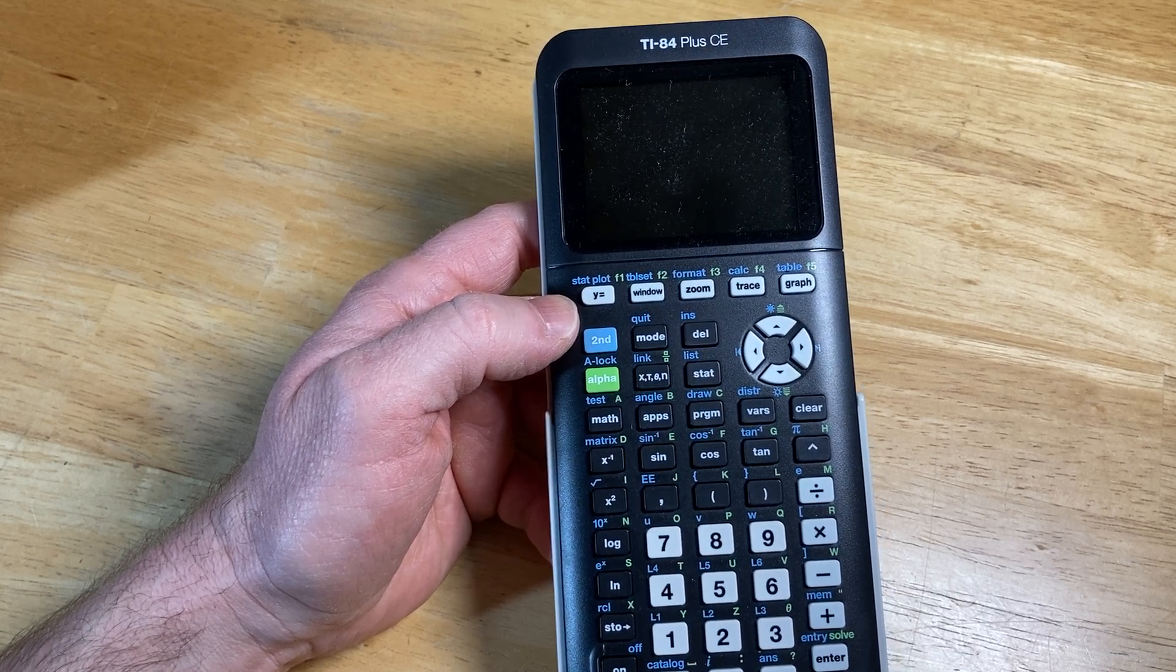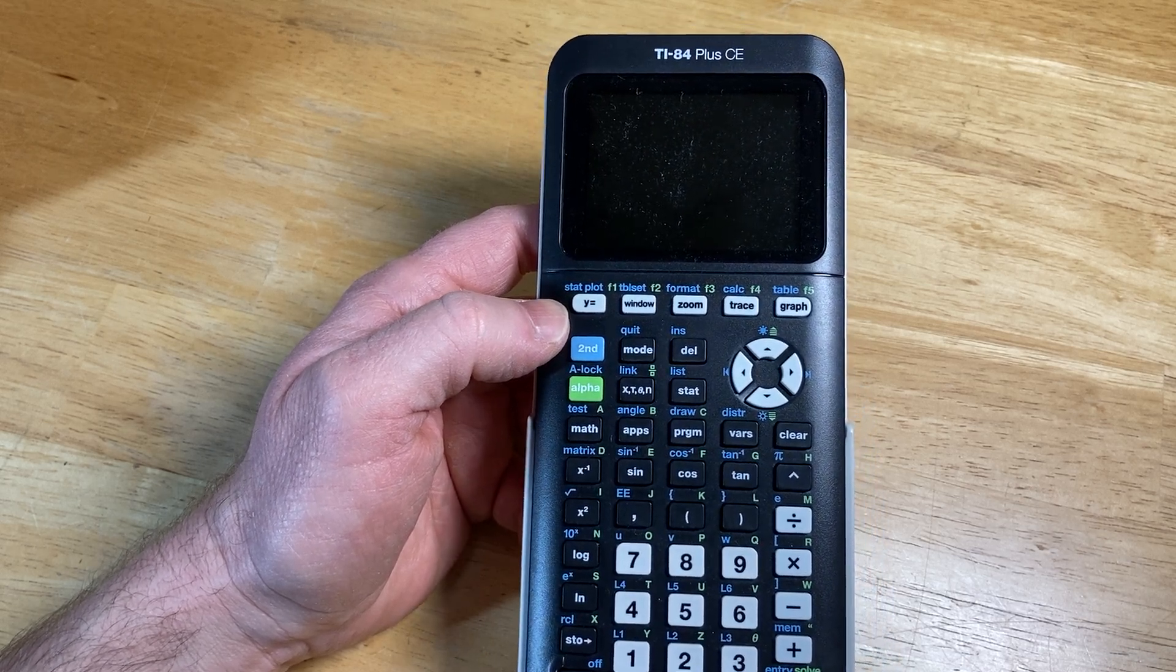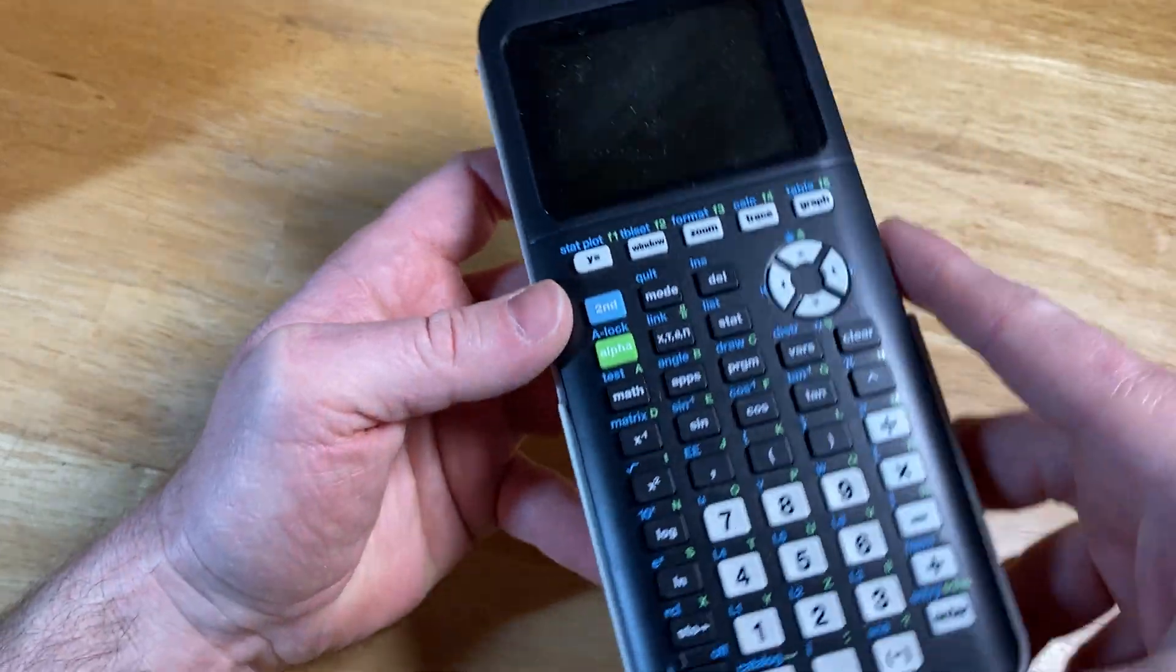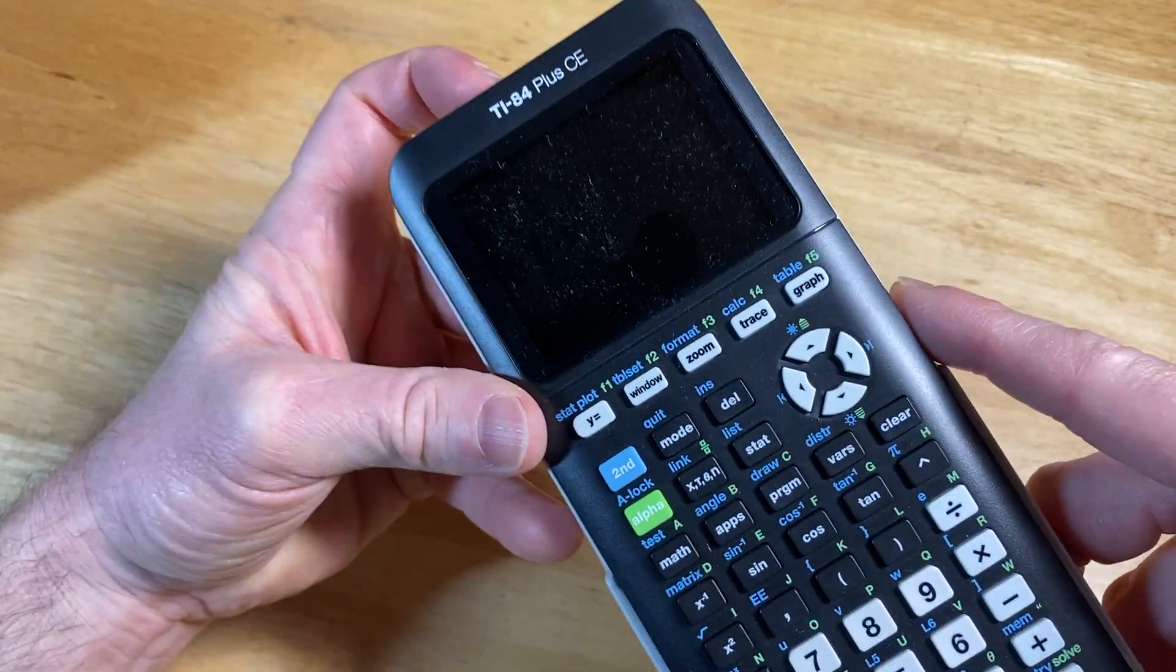Hello, in this video I'm going to show you how to switch back and forth between radian mode and degree mode in the TI-84 Plus CE graphing calculator.